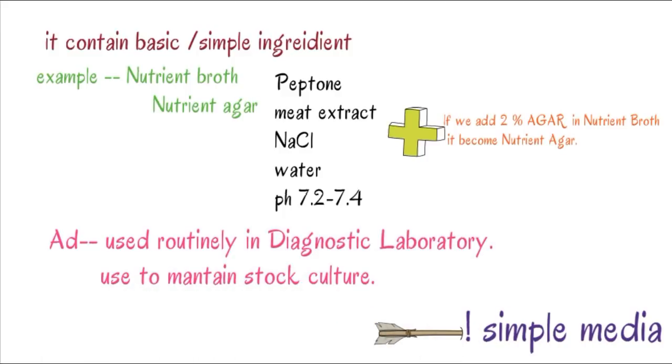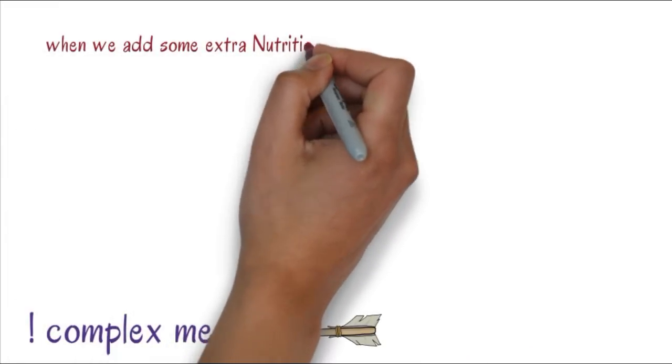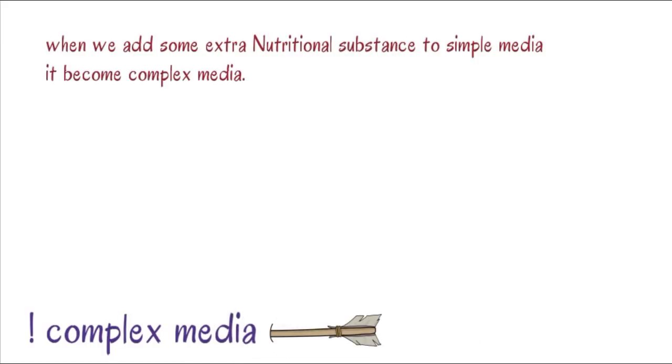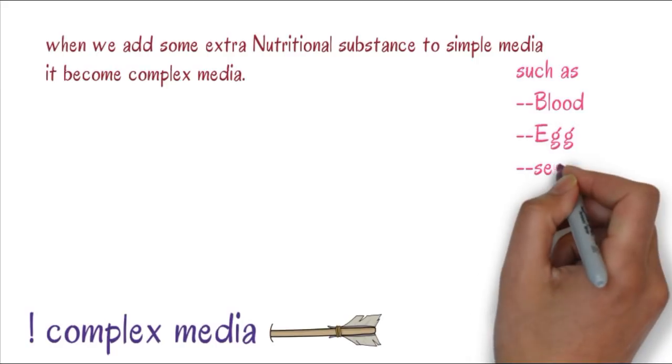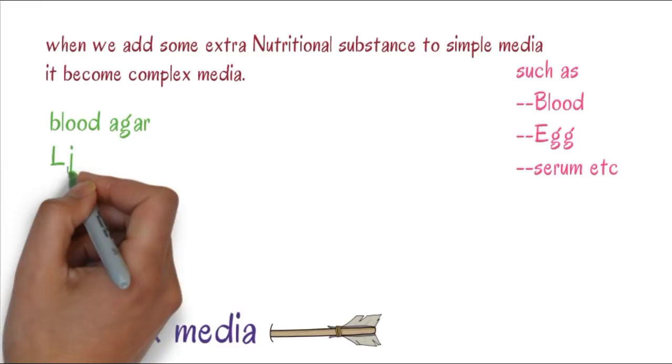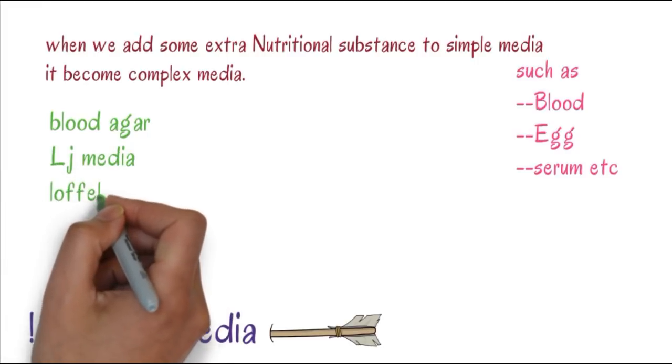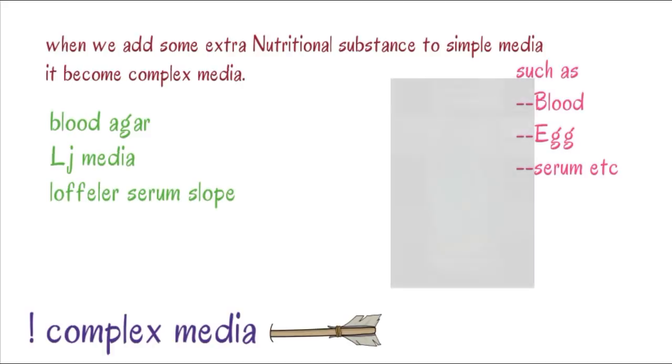Complex media: in addition to basic media, if we add some extra nutrient substance, it becomes complex media. Examples: if we add blood it becomes blood agar, if we add serum it becomes Loeffler serum slope. LJ media is Lowenstein-Jensen media.